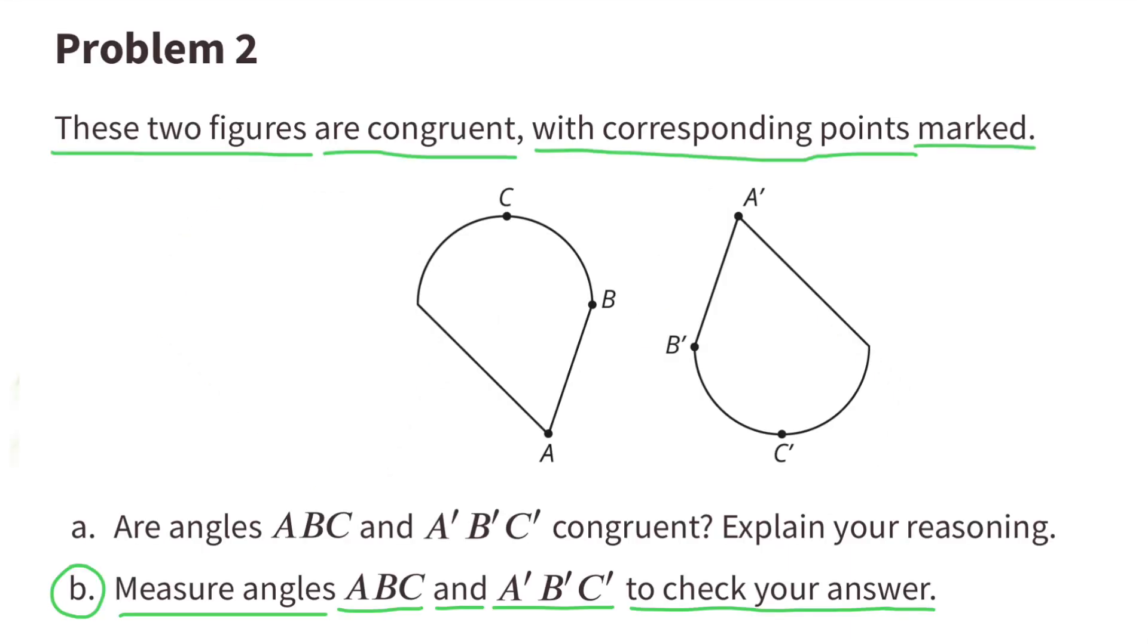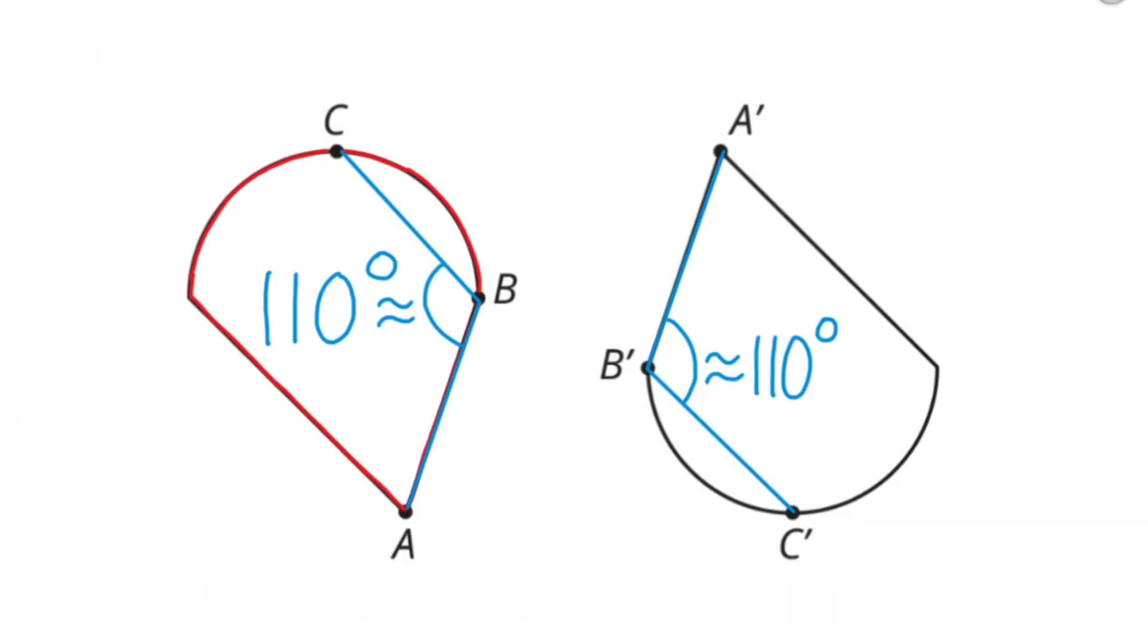(b) Measure angles ABC and A'B'C' to check your answer. You can use a protractor to measure these angles, and both of them measure just about 110 degrees. Since they have the same measure, angles ABC and A'B'C' are congruent.